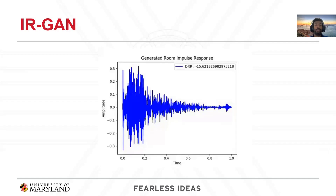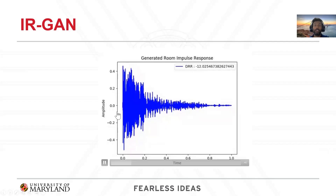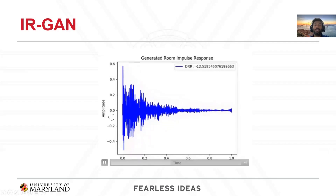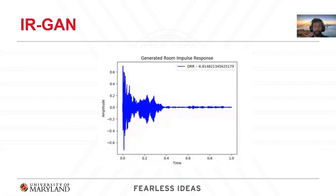We use acoustic parameters such as reverberation time, direct-to-reverberant ratio, early decay time, and early-to-late index to control room impulse response generation. In this video, we demonstrate how we increase the direct-to-reverberant ratio of the room impulse response from low to high. When the direct-to-reverberant ratio increases, the direct sound becomes stronger than the reverberation.